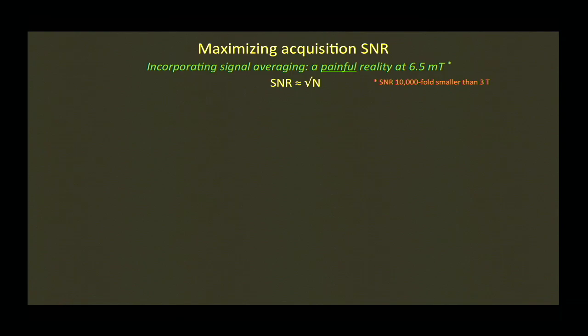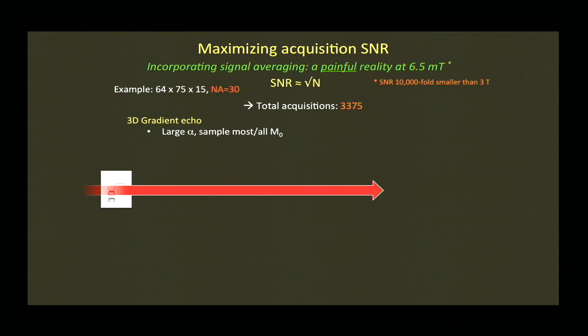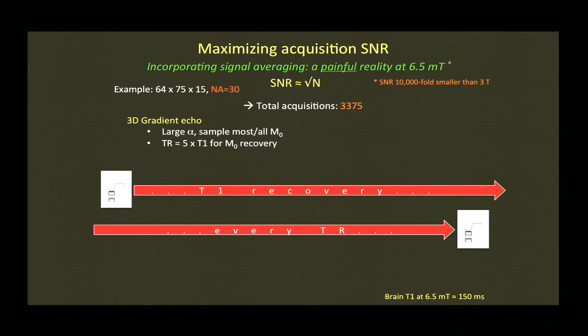The DOD was really interested in portable MR, so we needed to examine where the roadblocks are in terms of SNR. Let's look at pulse sequence design with signal averaging — SNR goes like the square root of the number of averages. To do a reasonable brain image in our lab at a 64×75×15 matrix size with about 30 averages, that's around 3,400 acquisitions. For a gradient echo 3D approach, you'd tip at 90 degrees, sample all your magnetization, then wait for T1. Even at low field where T1 is shorter, you're still waiting a significant fraction of a second between shots — totaling around 40 minutes.